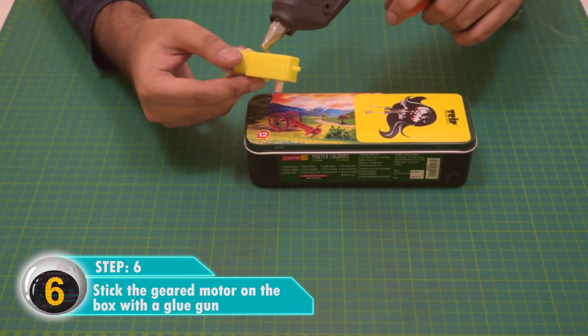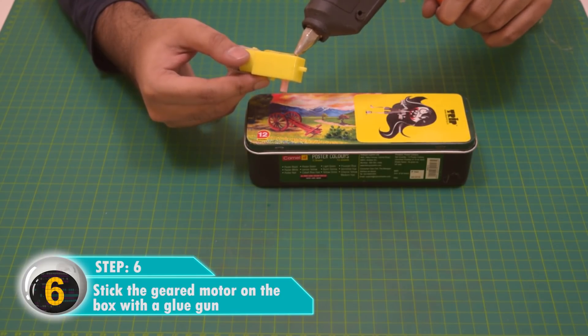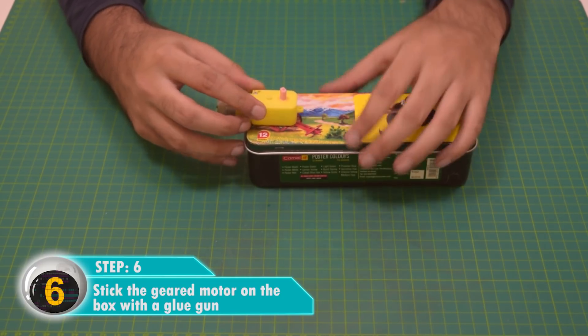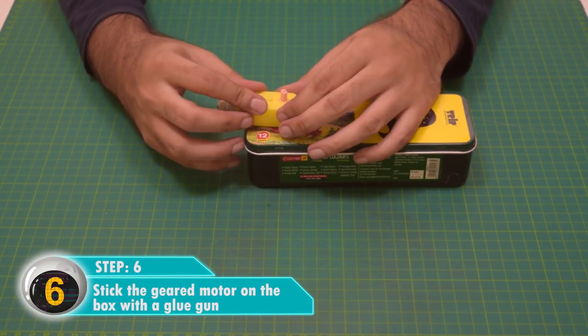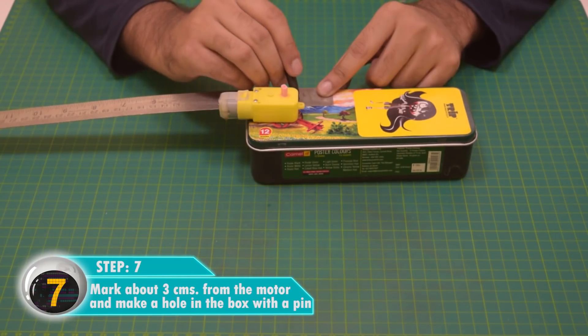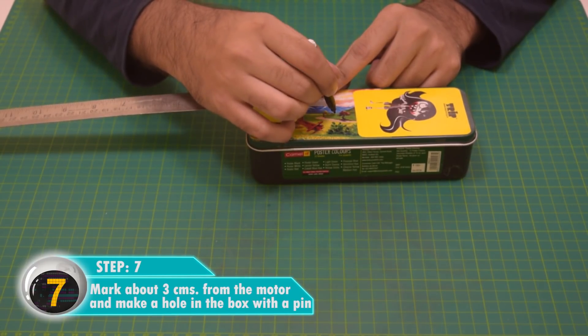Now we'll attach the motor to the box using a glue gun. Make sure to stick the motor a little outside from the box so you can attach the wires to the motor. Mark about three centimeters from the motor and make a small hole on the box.